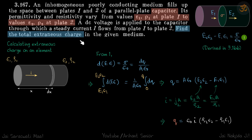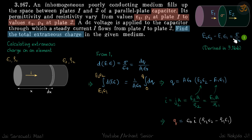The extraneous charge at a boundary between two media is given by: E₂ε₂ − E₁ε₁ = σ/ε₀. We derived this in a previous problem. This states that if you have a boundary between two media, the charge developed on that boundary surface is given by this expression.